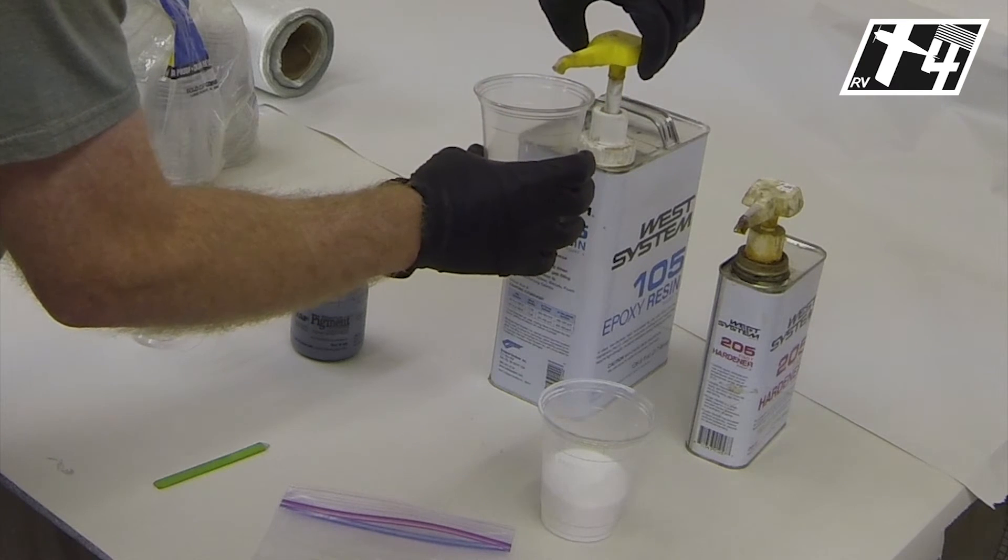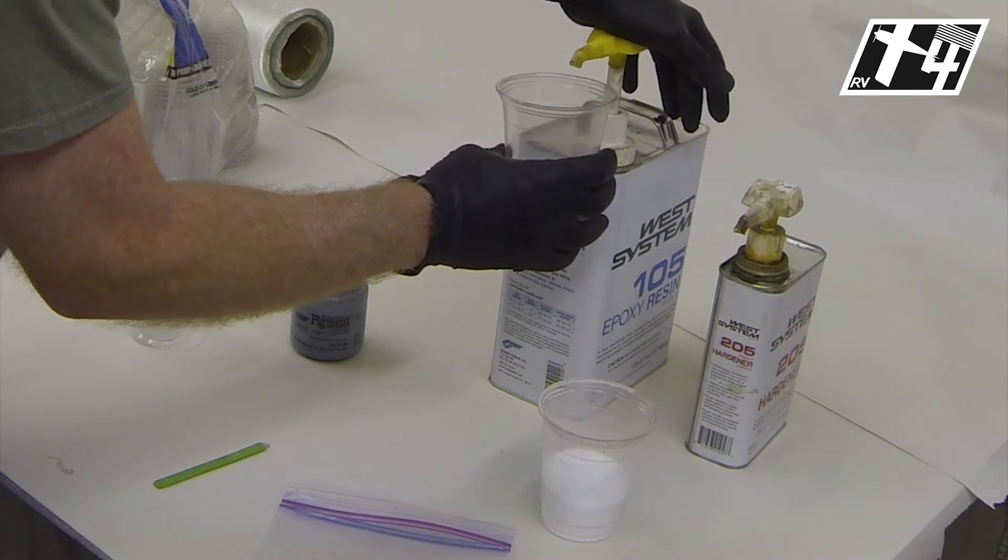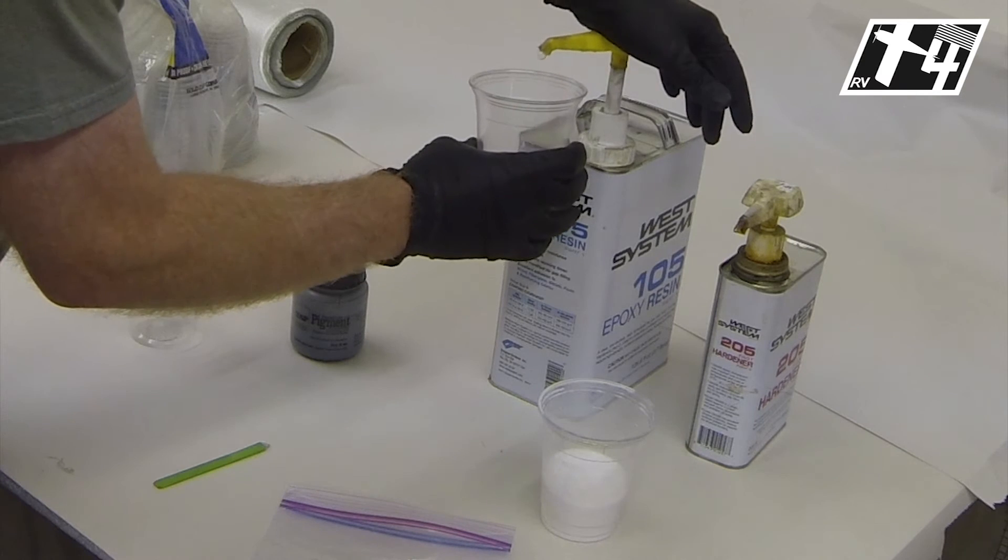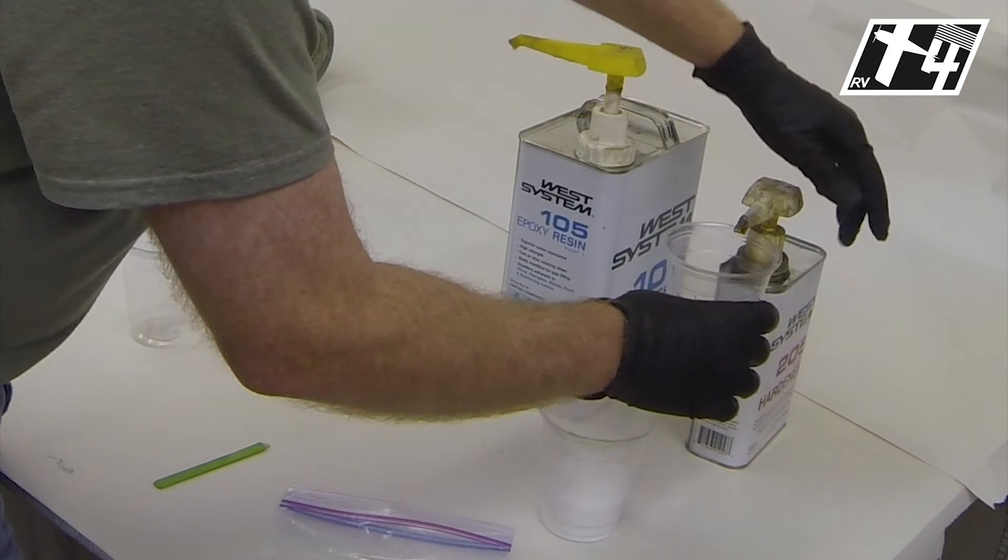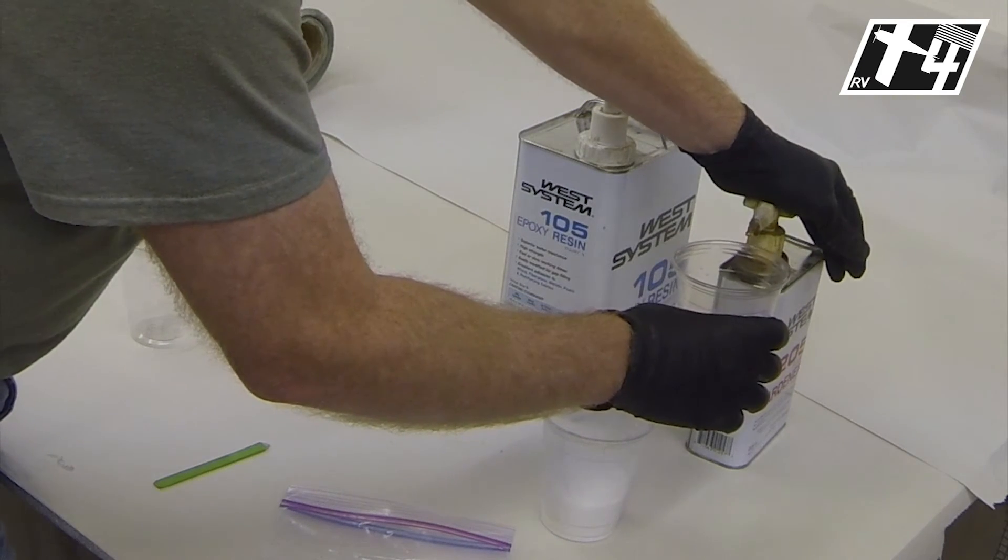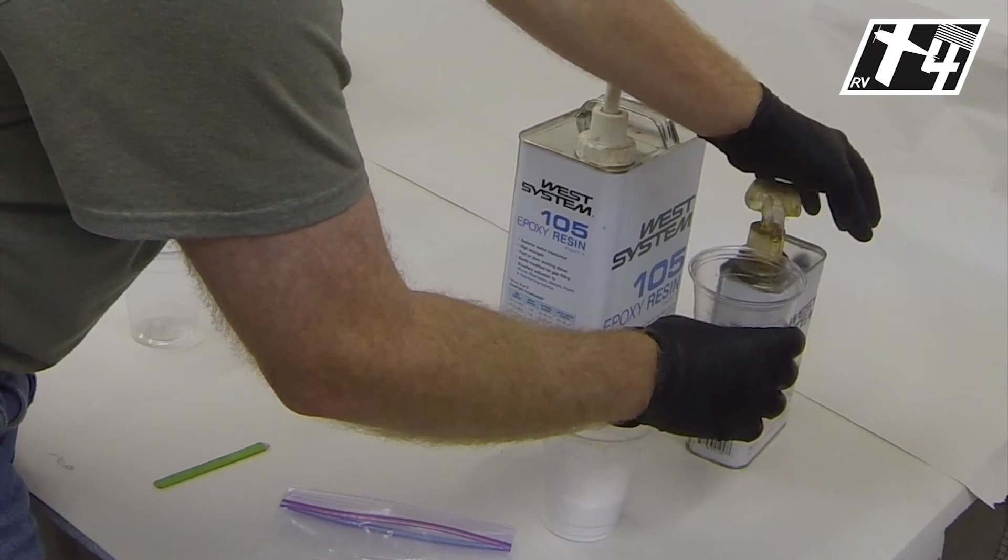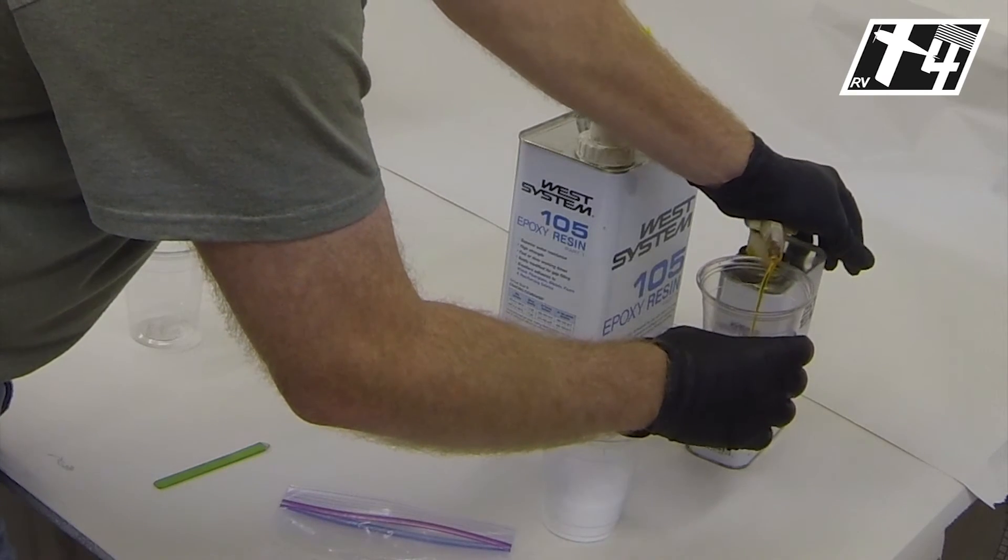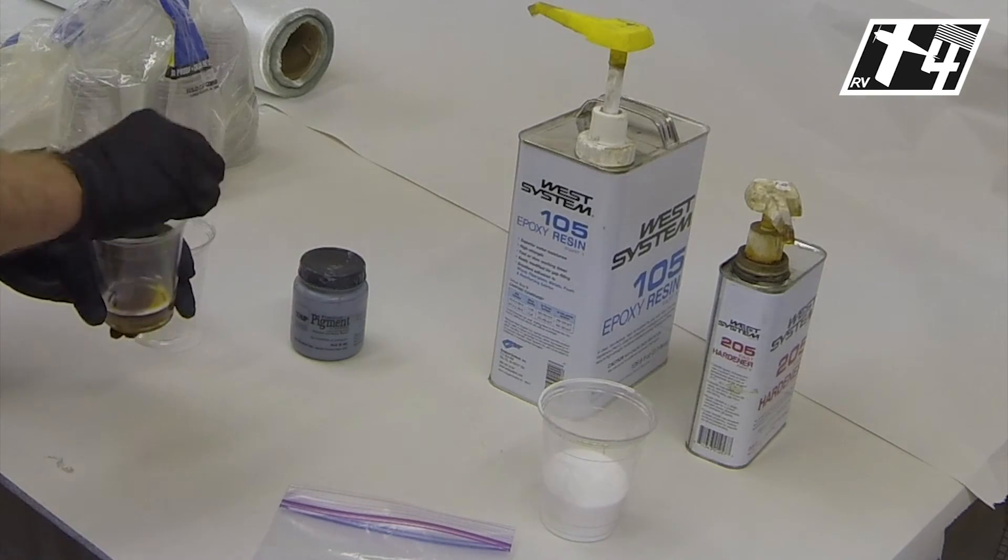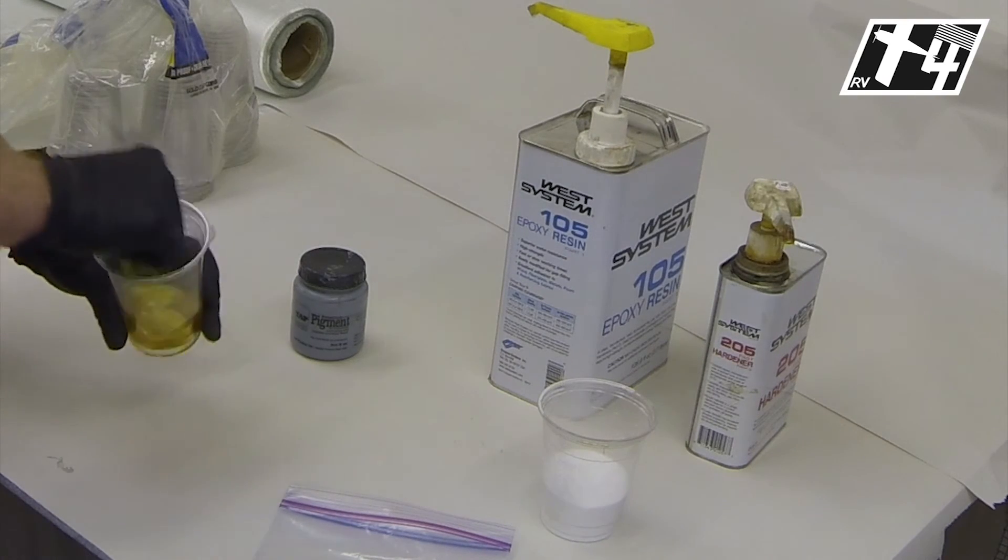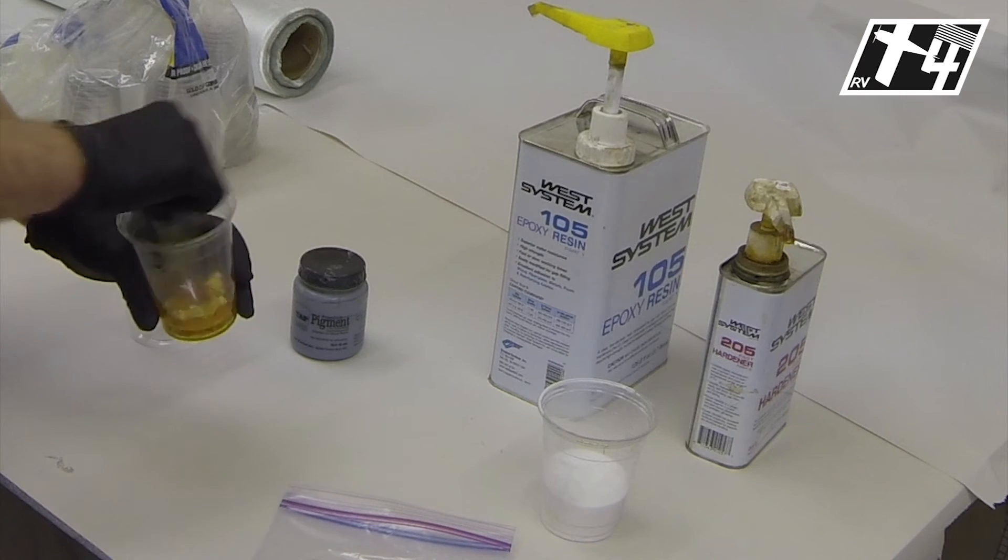Let's go ahead and get started mixing up some resin here. These are dispensing pumps that are available with the WEST systems. Most of the popular systems have the same type of thing where you just use one pump per one pump of hardener.